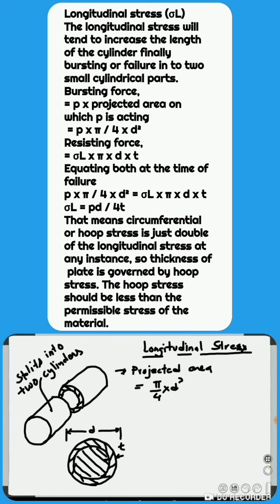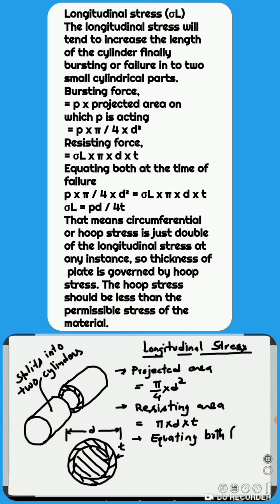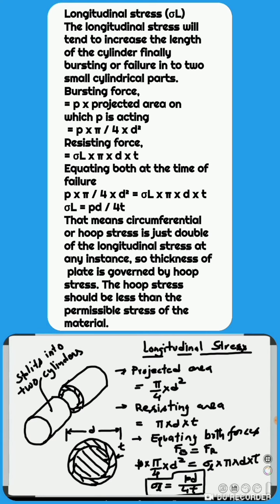The projected area is pi by 4 into D squared. The resisting force equals longitudinal stress Sigma L into pi into D into T, where the area of the resisting section is a ring of diameter D and thickness T, so the area along the critical resisting section is pi into D into T. Equating both forces at the time of failure: P into pi by 4 into D squared equals Sigma L into pi into D into T. So longitudinal stress comes out to be Sigma L equals P into D upon 4 into T.